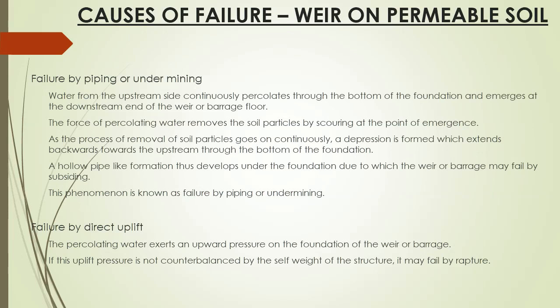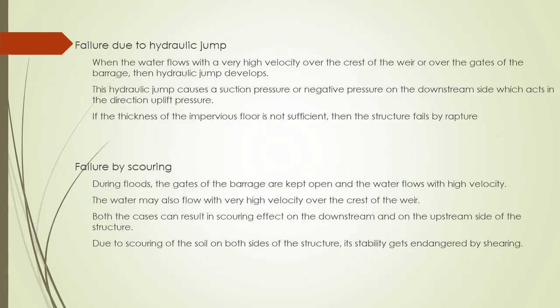The next type of failure is failure by direct uplift. The percolating water exerts an upward pressure on the foundation of the weir or barrage. If this uplift pressure is not counterbalanced by the self-weight of the structure, it may fail by rupture. The third type of failure is due to hydraulic jump. When water flows with very high velocity over the crest of the weir or over the gates of the barrage, a hydraulic jump develops. This causes a suction or negative pressure on the downstream side acting in the direction of uplift pressure. If the thickness of the impervious floor is not sufficient, the structure fails by rupture.